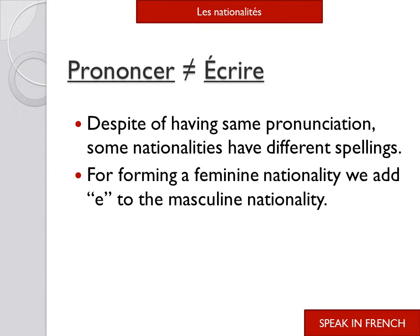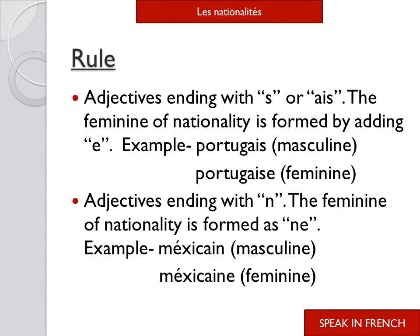The next part is where pronunciation does not equal spelling — meaning how we pronounce the nationality is not the same as how we write it. Despite having the same pronunciation, some nationalities have different spellings. To form a feminine nationality, we add 'e' to the masculine nationality, and there are certain rules to keep in mind. Rule number one: adjectives ending in S or AIS — the feminine is formed by adding 'e', which also changes the pronunciation.